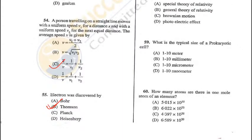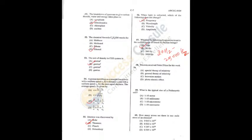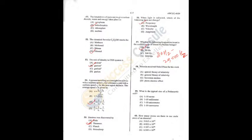Question 59: The typical size of a prokaryotic cell is 0.1–2.5 micrometers in diameter — C is the answer. Question 60: How many atoms are there in one mole of an element? Avogadro's number = 6.022 × 10²³ — B is the correct answer. To recap: Q59 = C, Q60 = B, Q58 = D.